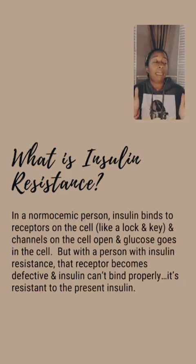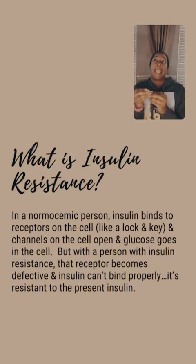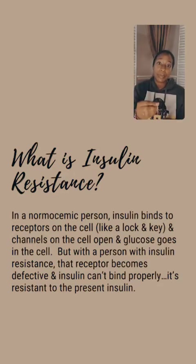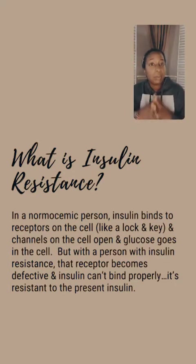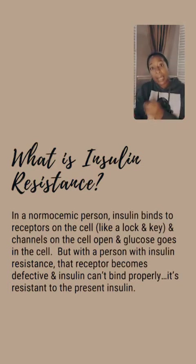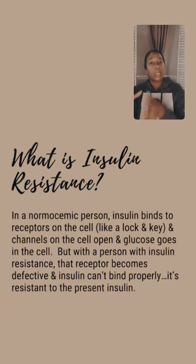Normally in a normal cell, insulin is like a transporter molecule. It binds to a receptor on the cell, and like a lock and key, it unlocks the glucose channel, which allows glucose to go into the cell. Now, with hyperglycemia, you have a high concentration of glucose in the bloodstream.